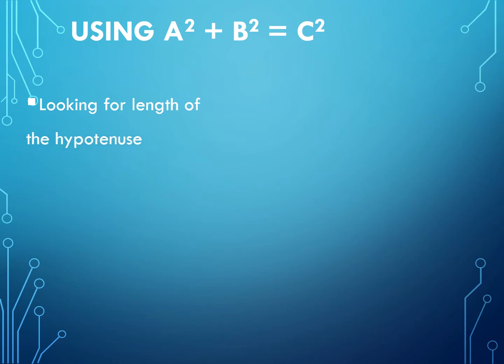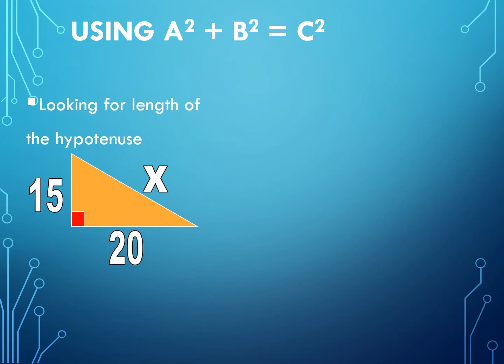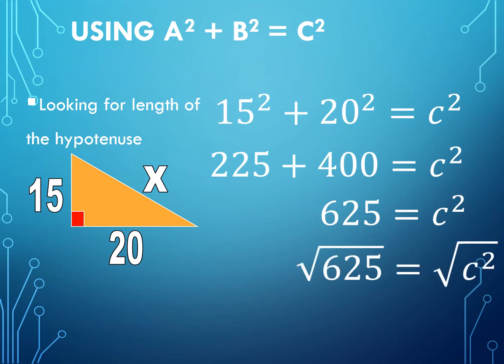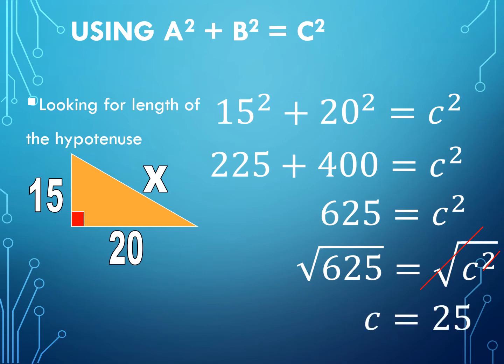Let us look for the length of the hypotenuse in this diagram. To compute for side X, we have 15 squared plus 20 squared is equal to C squared. 15 squared is equal to 225, and 20 squared is equal to 400. 225 plus 400 is equal to 625. We are going to extract the square root: the square root of C squared is C, and the square root of 625 is 25. So C is equal to 25, or side X is equal to 25.